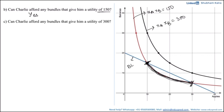Moving on to the next part: can Charlie afford any bundles that give him the utility of 300? The black indifference curve gives Charlie the utility of 300, and since it is lying completely above the budget line, this level of utility is not affordable for Charlie. So the answer here is no, because only those combinations are affordable by Charlie which lie on his budget line or below his budget line.